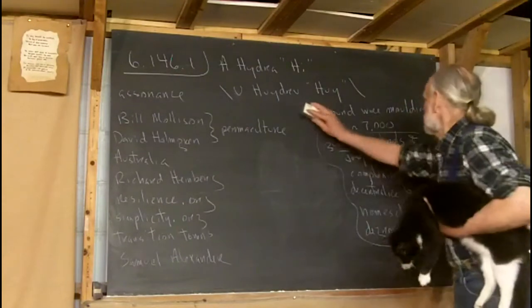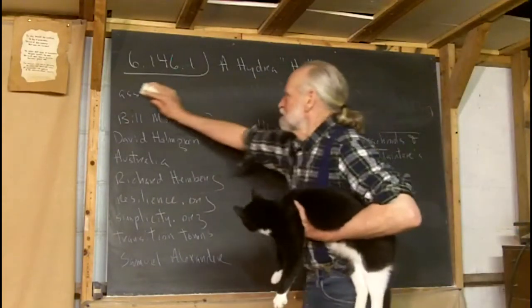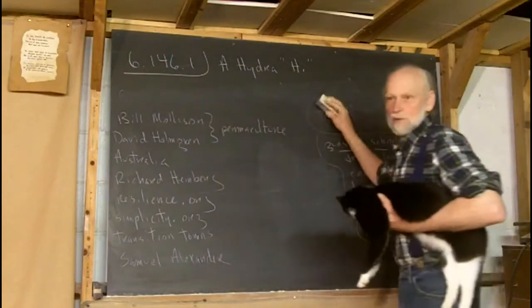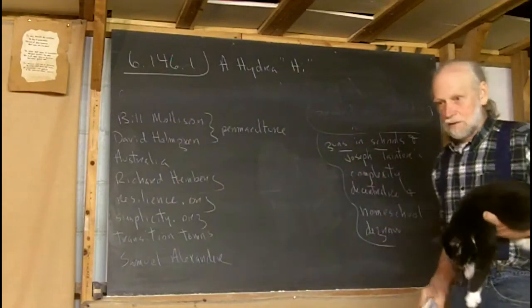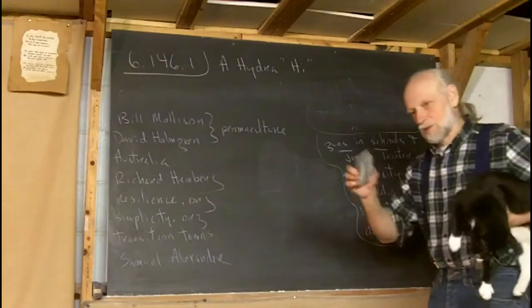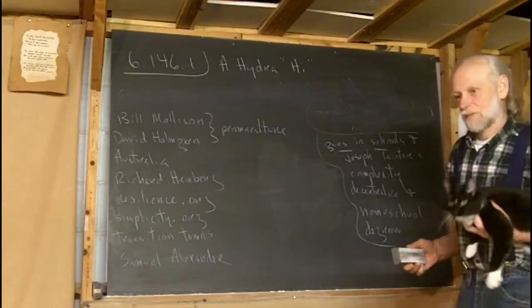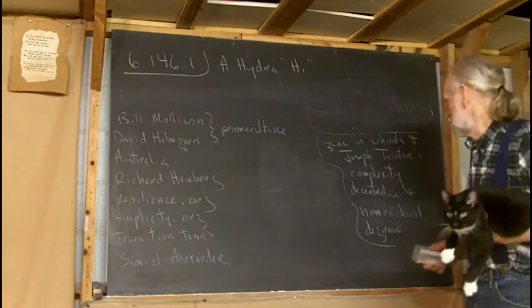All right. So much for that. So much for assonance. Assonance is when you've got a repeating vowel in language as opposed to consonance, which has repeating consonants. It's a little bit like rhyme.